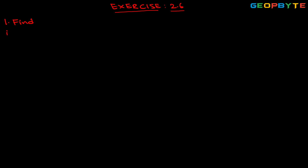Find: first one, 0.2 into 6. In order to perform multiplication using decimal numbers, first what we need to do is eliminate the decimal point. The given question is 0.2 into 6. If we remove the decimal point, we get 2 into 6, which is equals to 12. In the given decimal number, after the decimal point we are having only one digit.